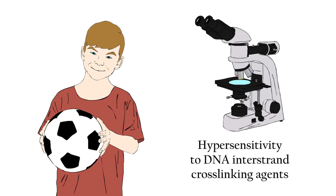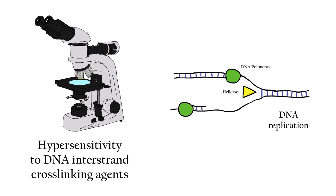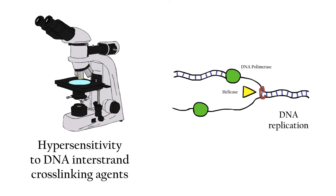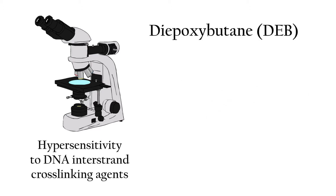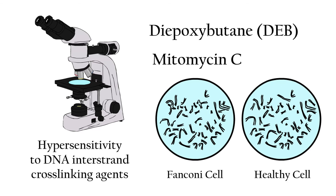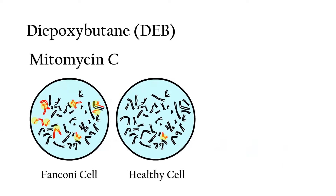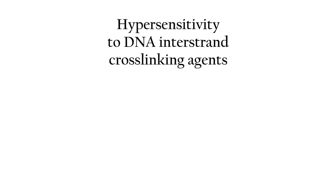In this laboratory test, cells are tested for their hypersensitivity to chemical agents that cause interstrand crosslinks. Fanconi anemia patients have difficulties when repairing interstrand crosslinks. In order to test this ability, interstrand crosslinks are induced by using chemical agents such as diepoxybutane or mitomycin C. Therefore, a Fanconi cell will present a greater number of chromosomal breakings as a result of the lack of DNA repair. This test is generally done on blood cells.